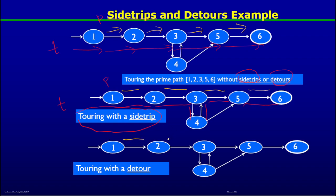For a tour with a detour, consider the same prime path 1→2→3→5→6. The test path starts at node 1, goes to 2, then 3, then leaves to node 4, and then goes to node 5 — a successor of node 3 — instead of returning to node 3. Since the test path left from node 3 and returned to the prime path at a successor of node 3, this is called a tour with a detour.